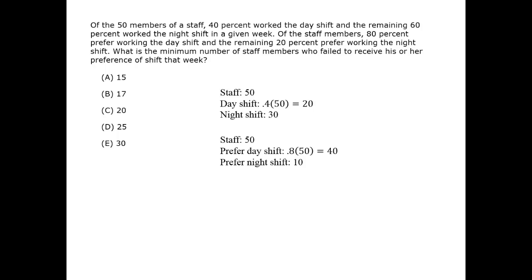Now, the minimum number of people not getting their preferences will also be the situation in which the maximum do get their preference. So say all 20 people who worked the day shift preferred it. That leaves 40 minus 20, or 20 people who prefer the day shift but didn't get it. There are 10 people left in the group of 50, and they worked the night shift — and those 10 people prefer the night shift, so those 10 got their preference.